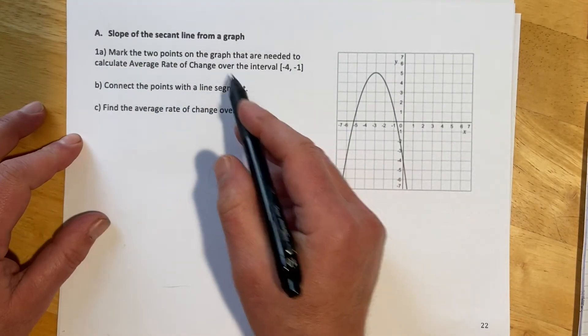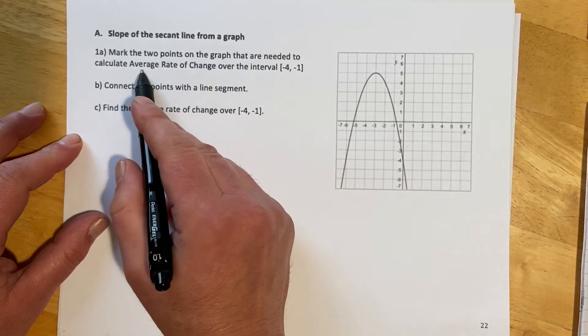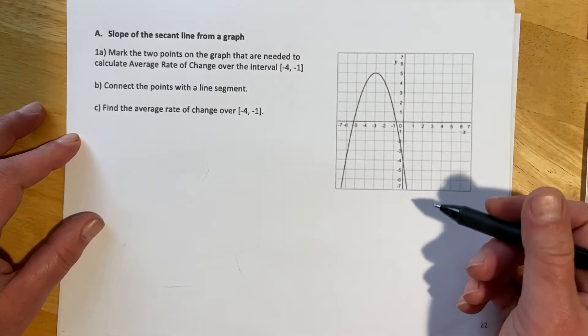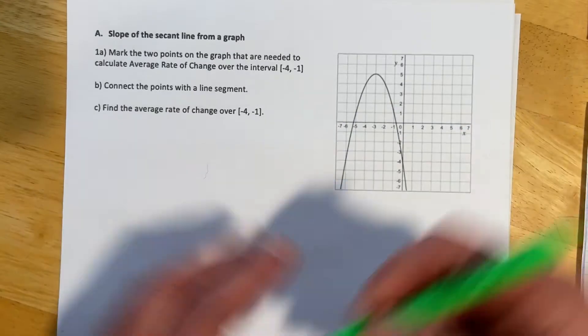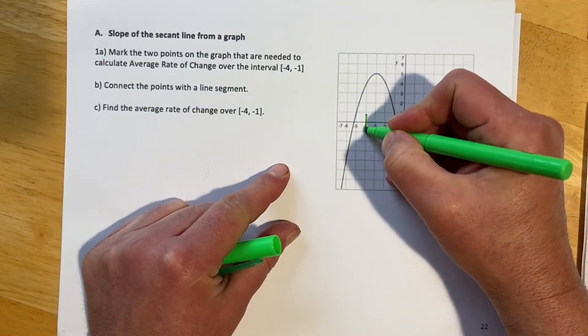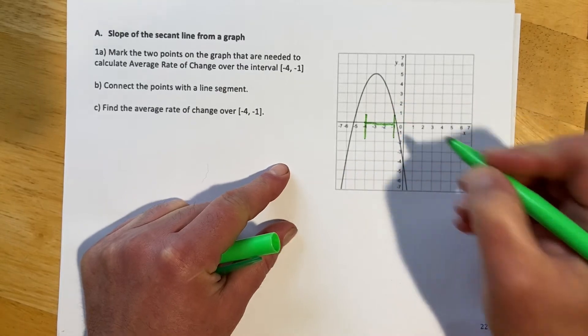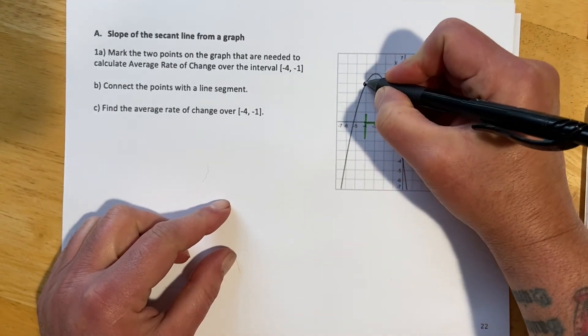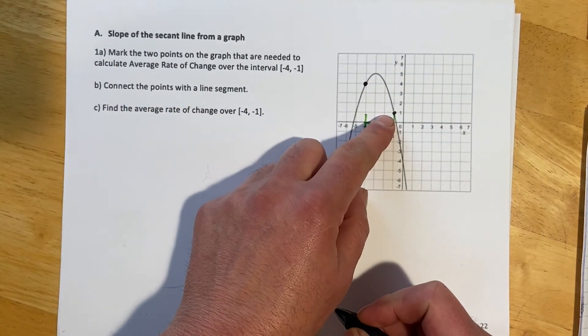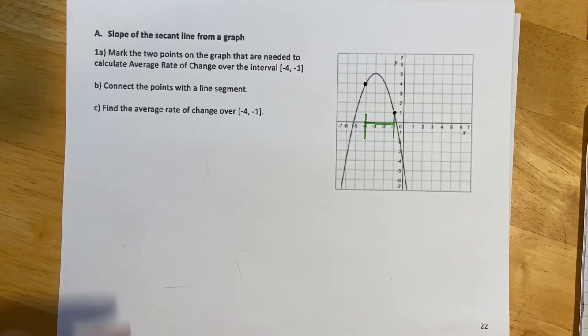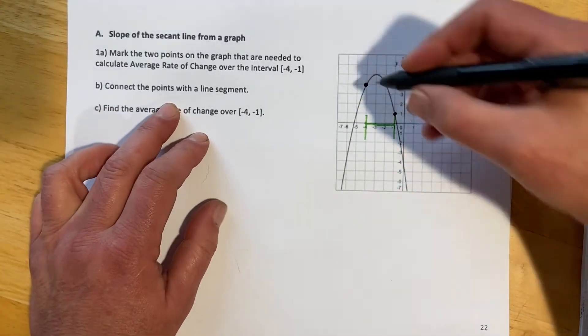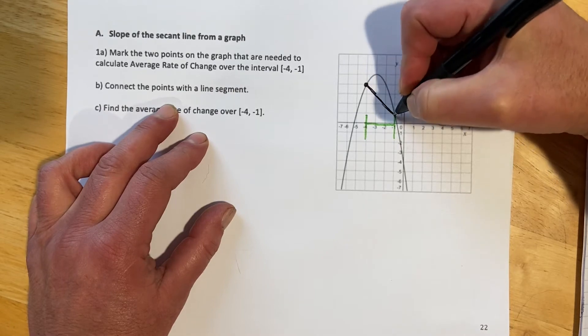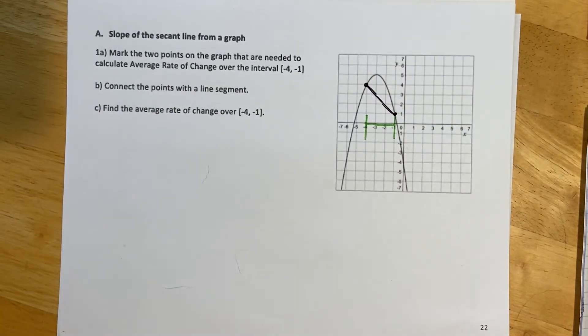Okay, for this first question, we're asked to mark the two points on the graph that are needed to calculate the average rate of change over the interval negative 4, negative 1. So we're asked to find the average rate of change between right here and right here. So this is the interval in which we are looking. And so then to do that, we would come up and we would mark our points. And then it asks us to connect the points with a line segment.